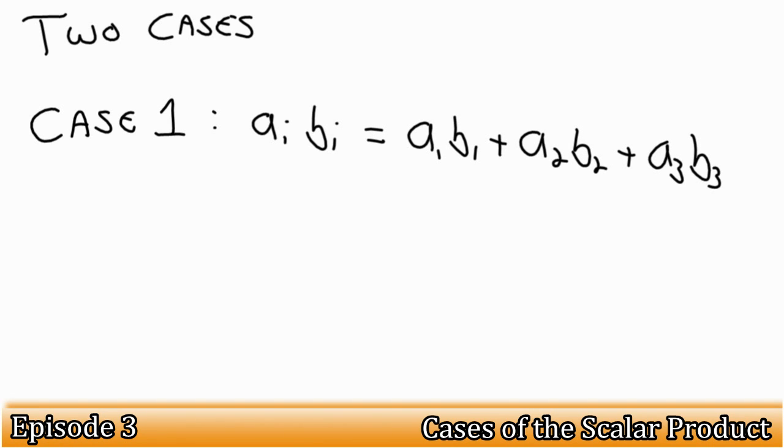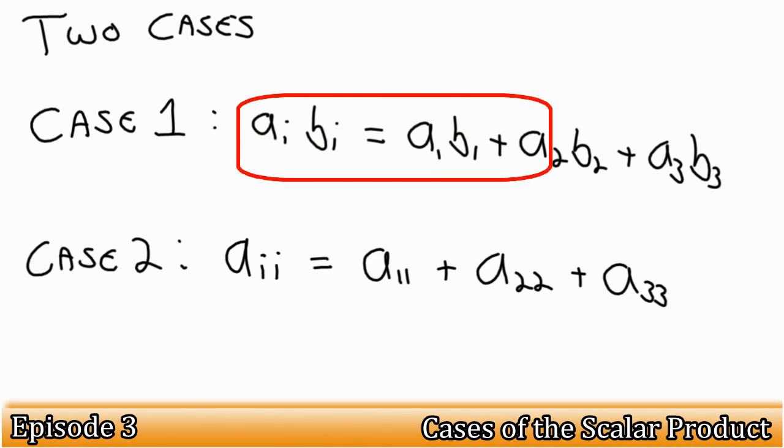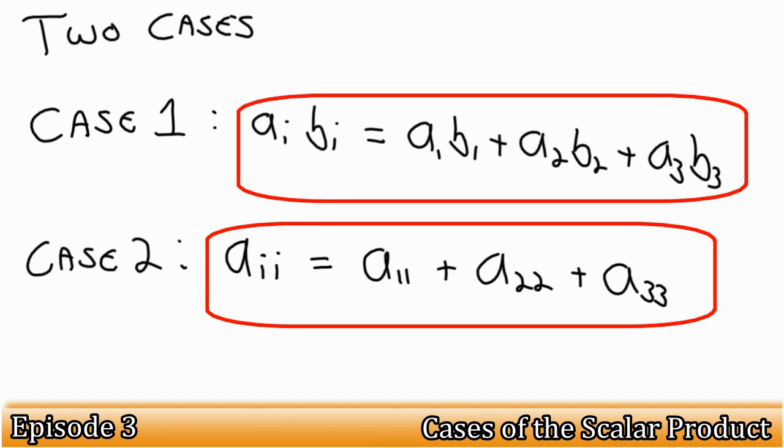And the other case is when we have one distinct tensor. For example, Aii. This might be slightly less obvious, but Aii still results in three components. These components are Aii is equal to A11, A22, and A33. We can see that this works for second order tensors.